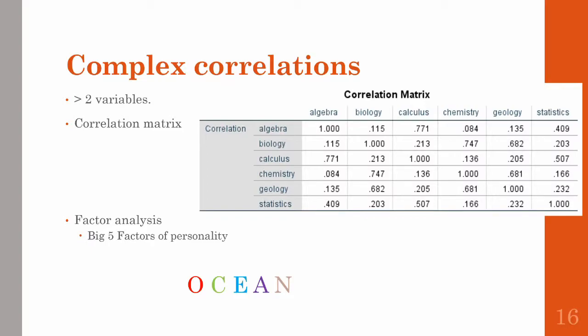When researchers look at a large number of similar variables, they often use a technique called factor analysis. A factor analysis is a way to organize variables into a smaller set or cluster, where variables inside a cluster are all highly correlated and variables across different clusters have low correlations. These different clusters or factors are interpreted as belonging to the same underlying construct — so algebra and statistics might fit under a math factor, and biology and chemistry might cluster under a science factor.